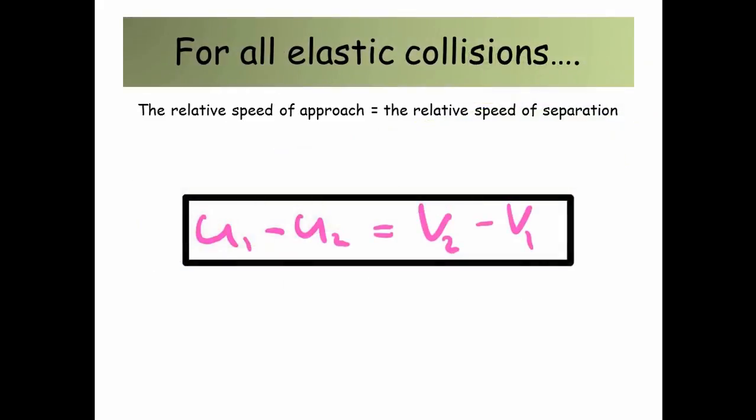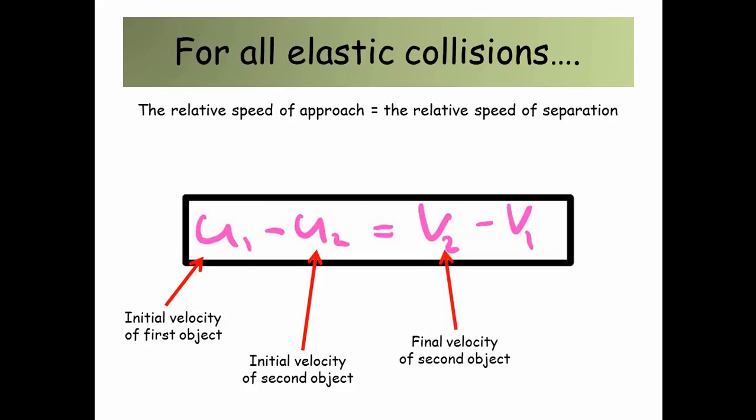So for all elastic collisions, the relative speed of approach is equal to the relative speed of separation. Here we've got U1 minus U2, so U1 is the initial velocity of the first object, and then U2 is the initial velocity of the second object, and that's equal to V2, which is the final velocity of the second object, minus the final velocity of the first object.